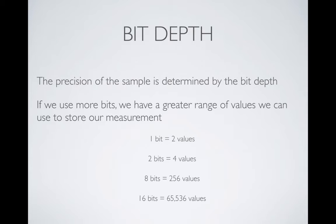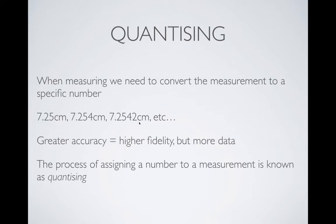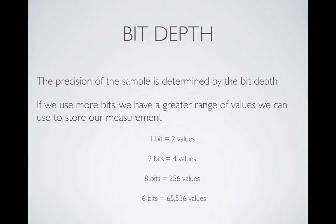The precision of the sample is determined by the bit depth. If we're increasing our accuracy, we're going to need more bits inside the computer to store that figure. If you have only one bit, you have zero or one — not very useful. Two bits gives four values, eight bits gives 256, 16 bits gives 65,536 values, and so on. More bits gives you more numbers, which gives you greater accuracy.